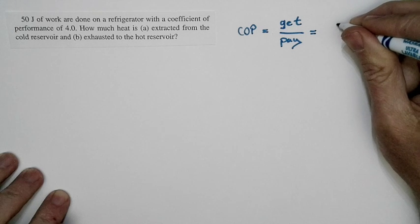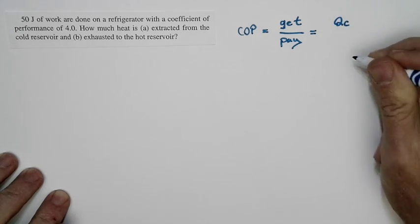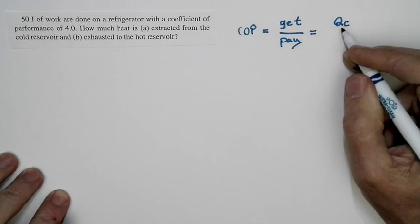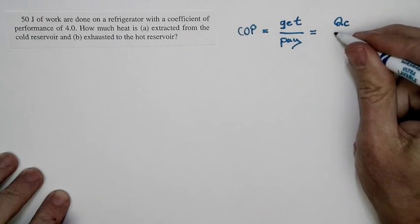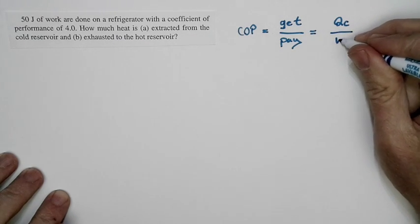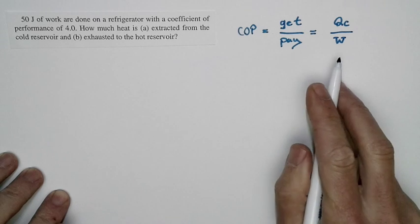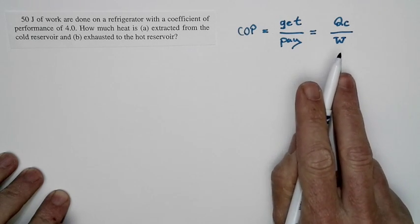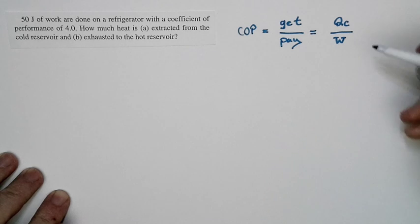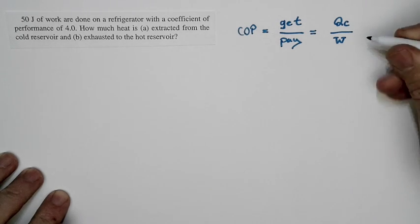Well, for a refrigerator, what you get is heat that you've pulled out of the cold reservoir. And the cold reservoir is basically the inside of the fridge. What you have to pay is W. W is the useful work that comes in. That's the electric energy that you get out of the outlet. So, what you get divided by what you had to pay.